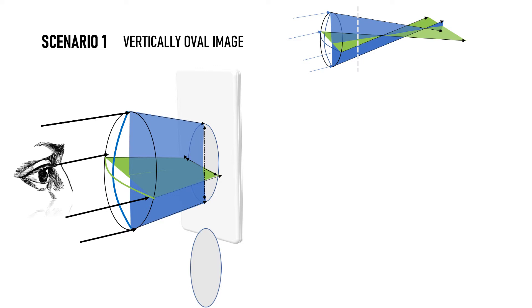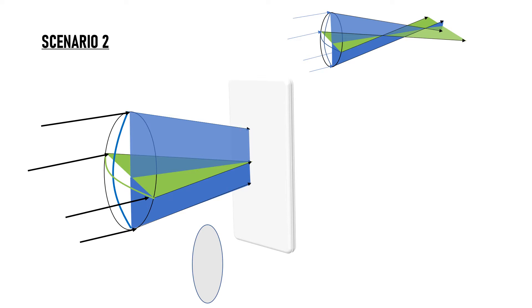Scenario 2: if we move the screen to the focal point of the horizontal meridian, the horizontal beam has fully converged to form a point, but the vertical beam is still on its way to its focal point. So the image formed here is produced only by the vertical beam of light, and we get a vertical line on the screen. The image of our point source placed at infinity looks like a straight vertical line here, not a point.